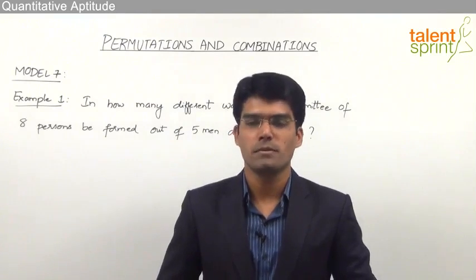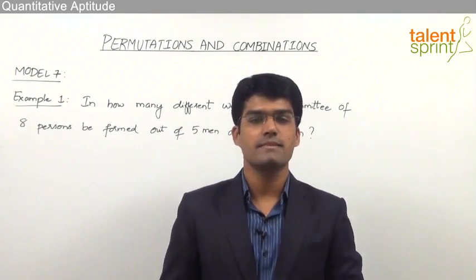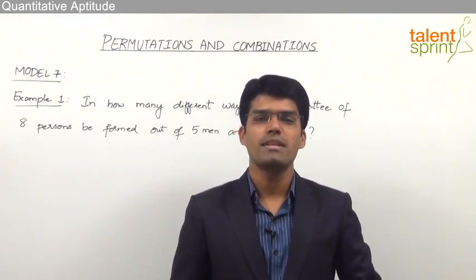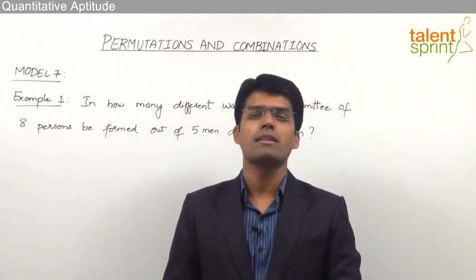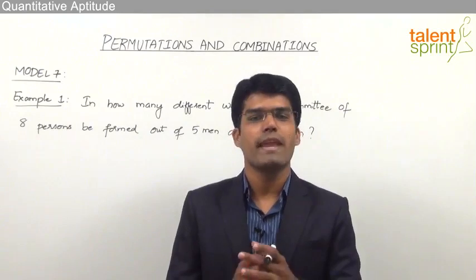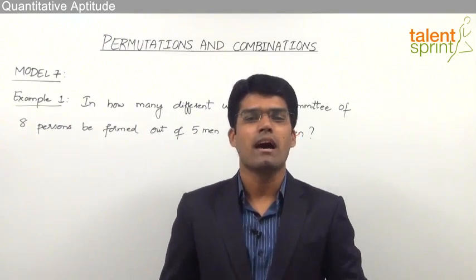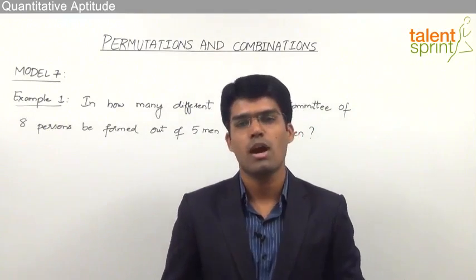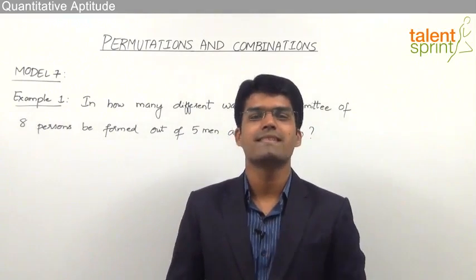Let us now take the 7th model from this topic of permutations and combinations where we shall discuss basic questions related to combinations. Combinations is nothing but selection or grouping of some or all the given objects, and the number of combinations of n objects taken r at a time is given as nCr, which is equal to n factorial by (n minus r) factorial into r factorial. Let us see some applications of this formula.